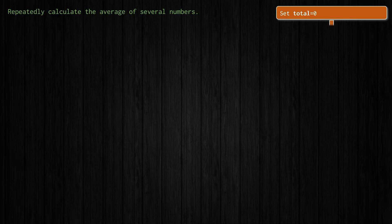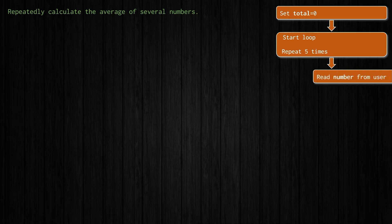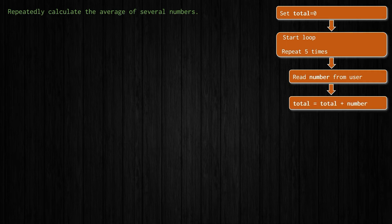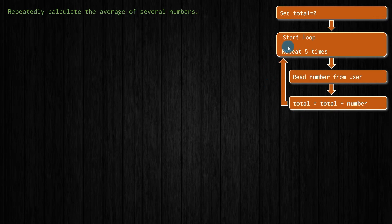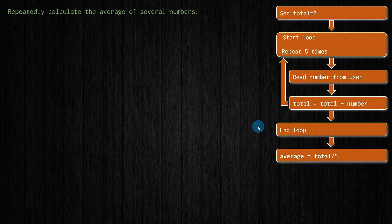Then we start a loop of five cycles because we're going to input five numbers. Each time we get a number from the user and update the total. The total starts at zero, the user inputs a number, and we re-evaluate our total as what we currently have plus the new number. We keep doing this until five numbers have been input, at which point we end the loop, divide the total by five, and print the average result.